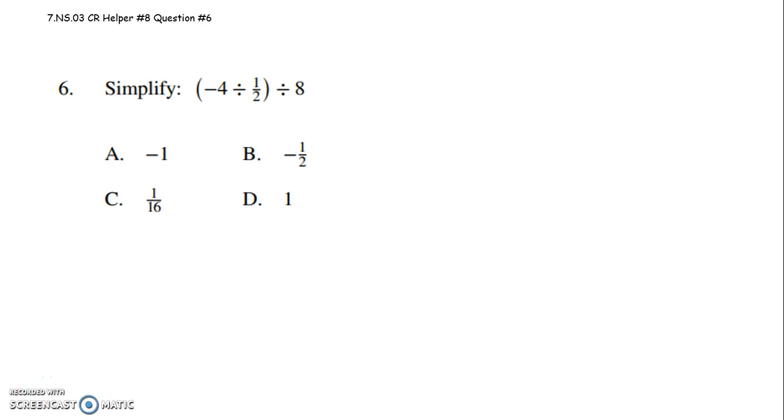All right, 7th graders, this is to help you with question 6 on CR number 8. It says to simplify, and then within parentheses you have negative 4 divided by 1 half, then outside the parentheses it says divided by negative 8.